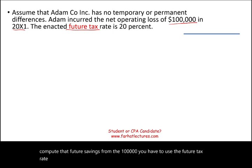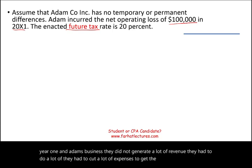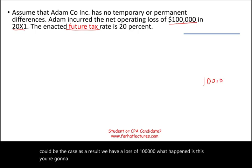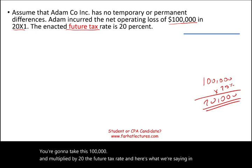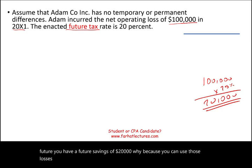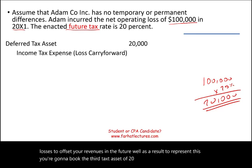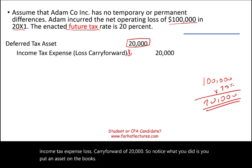Since Adam incurred a loss — maybe this is year one in Adam's business; they did not generate a lot of revenue and had to incur a lot of expenses to get the business going — as a result, we have a loss of $100,000. You're going to take this $100,000 and multiply it by 20%, the future tax rate. In the future, you have a future savings of $20,000, because you can use those losses to offset your revenues in the future. To represent this, you're going to book the deferred tax asset of $20,000 and credit income tax expense — loss carry forward — of $20,000. So you put an asset on the books and you reduced your income tax expense.